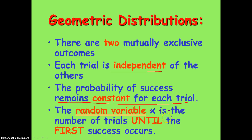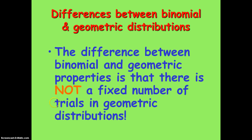The difference is that for a geometric distribution, the random variable x is the number of trials until the first success occurs. Now this is very important. In a binomial distribution, we are usually determining the number of successes, or how likely it is we would get some number of successes in a certain number of trials. Here we are determining how likely it is that we will get a success by performing a certain number of trials. The key difference is that there is no fixed number of trials in a geometric distribution.